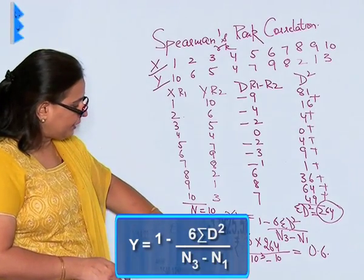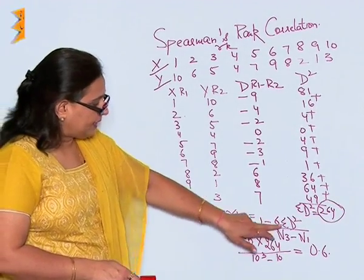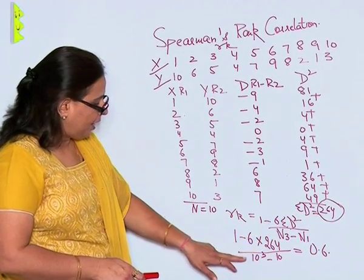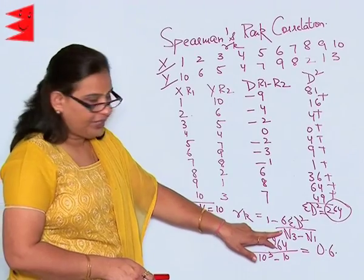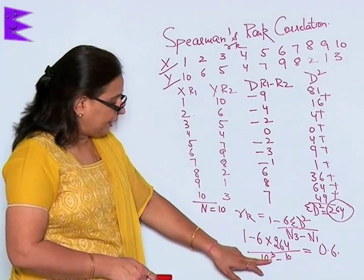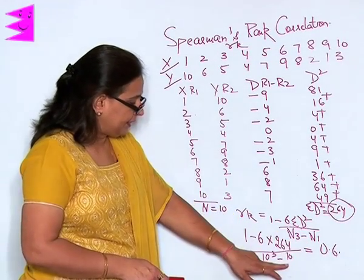Which means 1 minus 6, and my sigma d square is 264 into 264 upon n³, the number of observations cubed, that is 10 to the power of 3 minus n, that is 10.